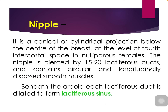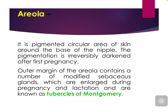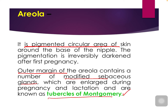The nipple is pierced by 15 to 20 lactiferous ducts. Beneath the areola, each lactiferous duct is dilated to form the lactiferous sinus. The areola is a pigmented circular area of skin. The outer margin of the areola contains modified sebaceous glands which are enlarged during pregnancy — this is why they are called tubercles of Montgomery.